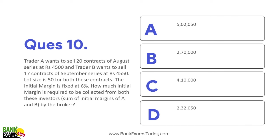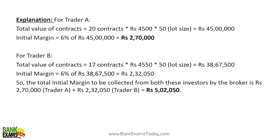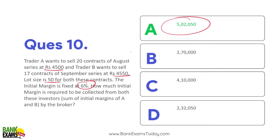Question 11: Trader A wants to sell 20 contracts of August series at ₹4,500; Trader B wants to sell 17 contracts of September series at ₹4,550. Lot size is 50 for both. Initial margin is fixed at 6%. How much margin is required from both investors? Simple calculation — 6% of total trade value. Trader A: ₹2,70,000 and Trader B: ₹2,32,000 — total ₹5,02,500.